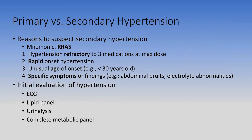Use the RRAS mnemonic to suspect secondary hypertension: hypertension Refractory to three medications at maximum dose; Rapid onset (days to weeks); Atypical Age (a 30-year-old or elderly person with new hypertension); or Specific symptoms or findings. For example, an abdominal bruit may suggest renal artery stenosis; hypernatremia and hypokalemia may suggest aldosterone excess. If any of these four are present, look for a test specifically targeting secondary hypertension.